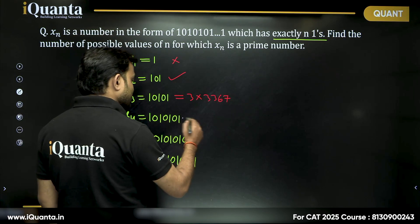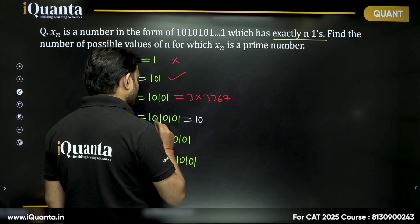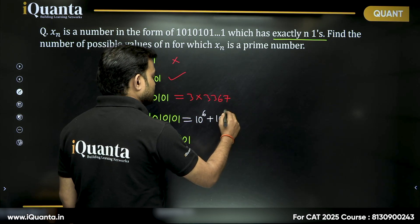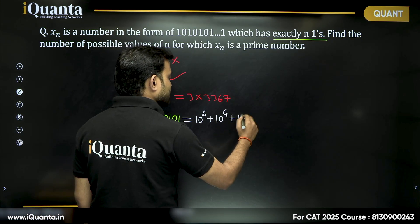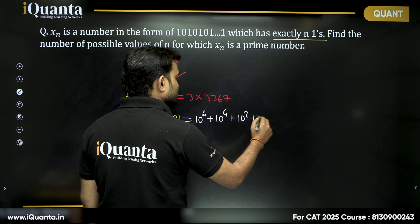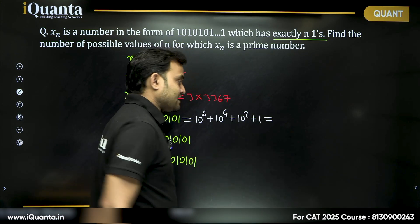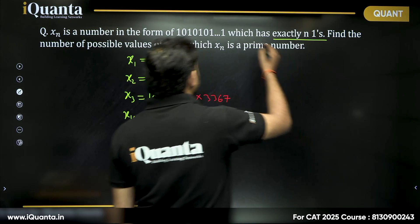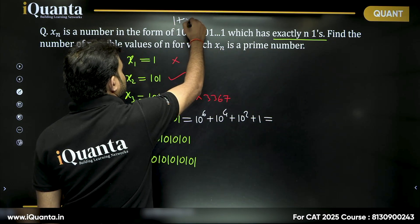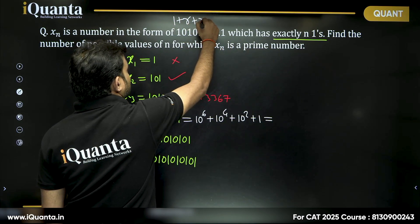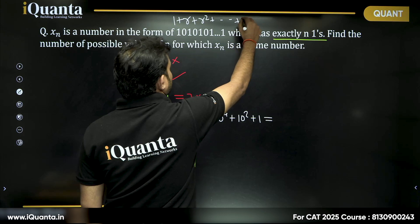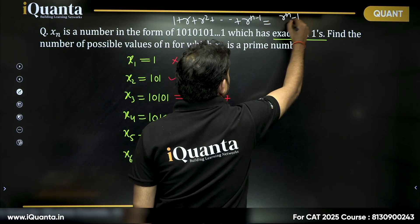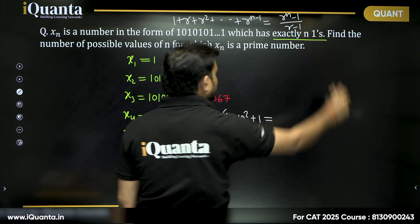Can I write x_n as 10^6 + 10^4 + 10^2 + 1, which can be written using the sum of a geometric progression? The sum formula is: 1 + r + r^2 + ... + r^(n-1) = (r^n - 1) / (r - 1).